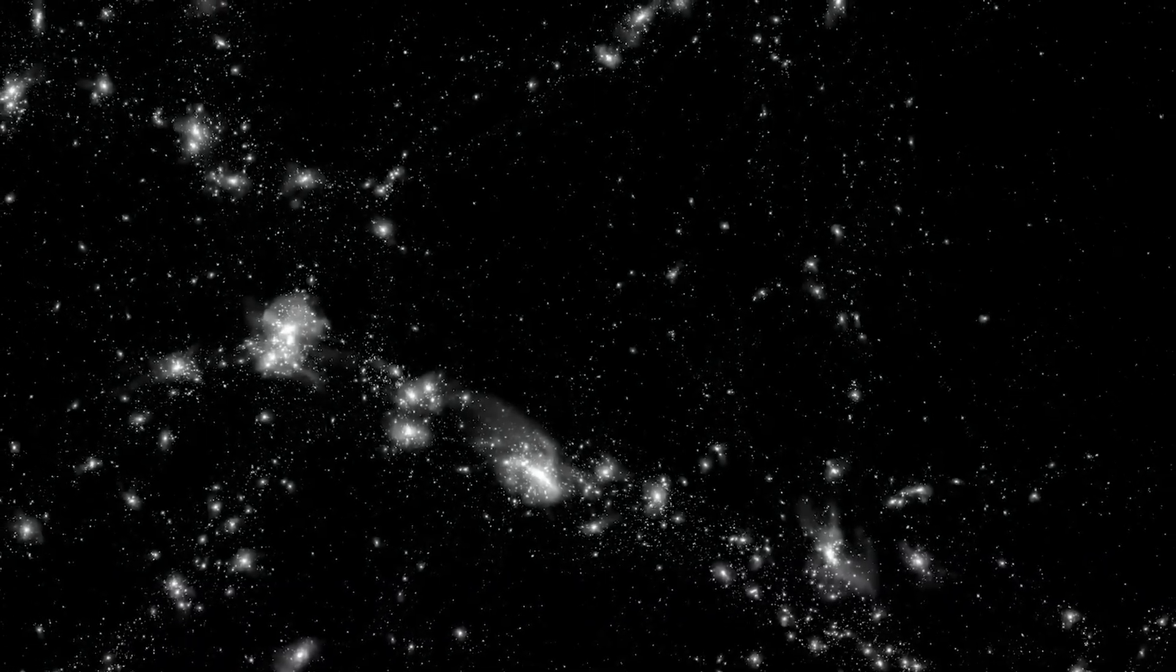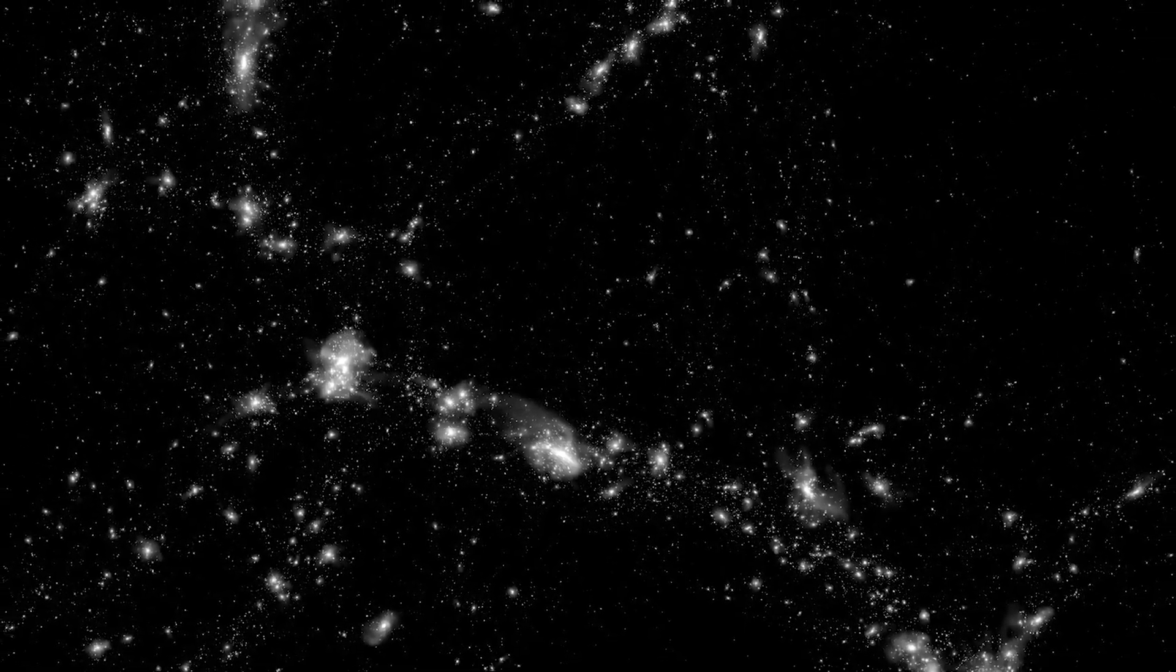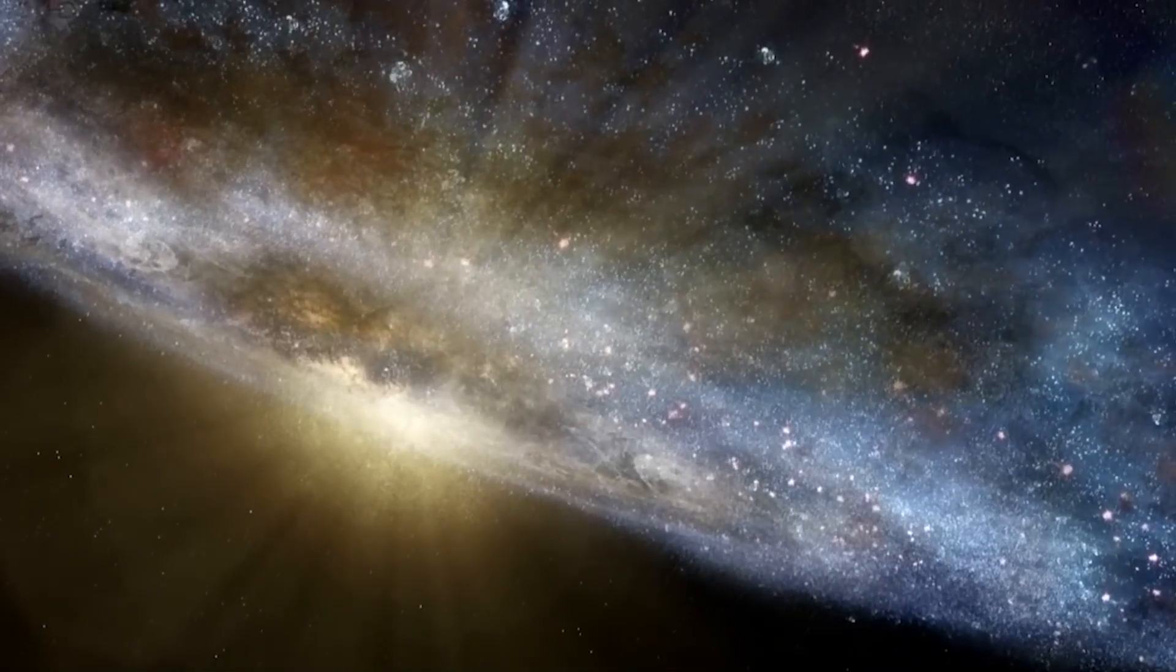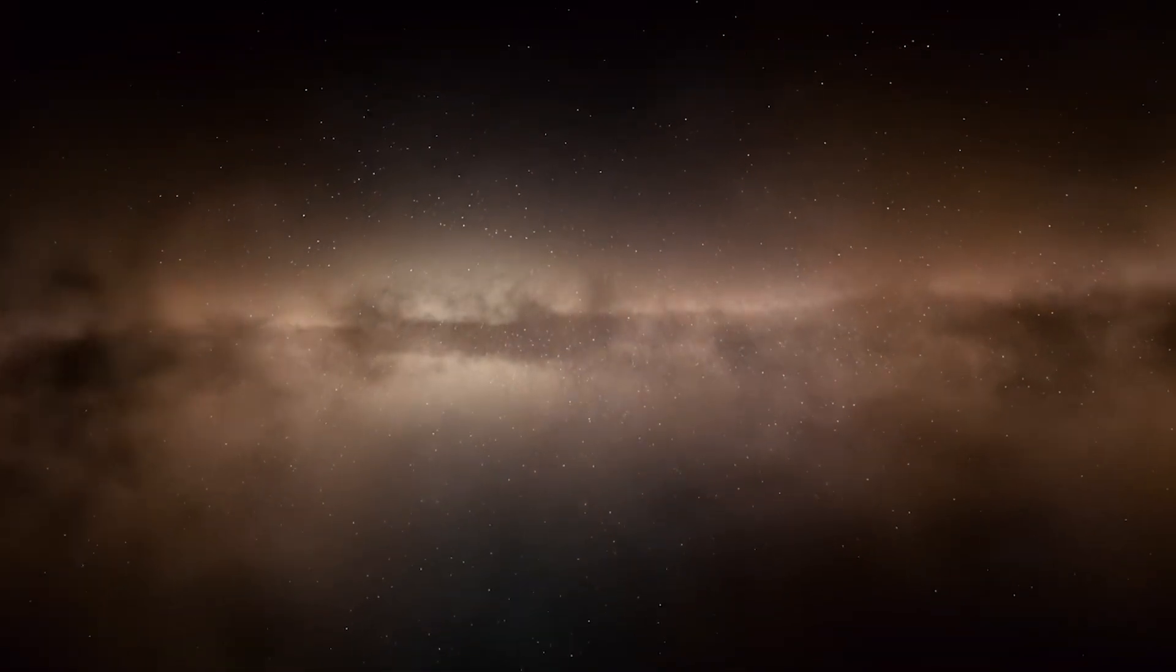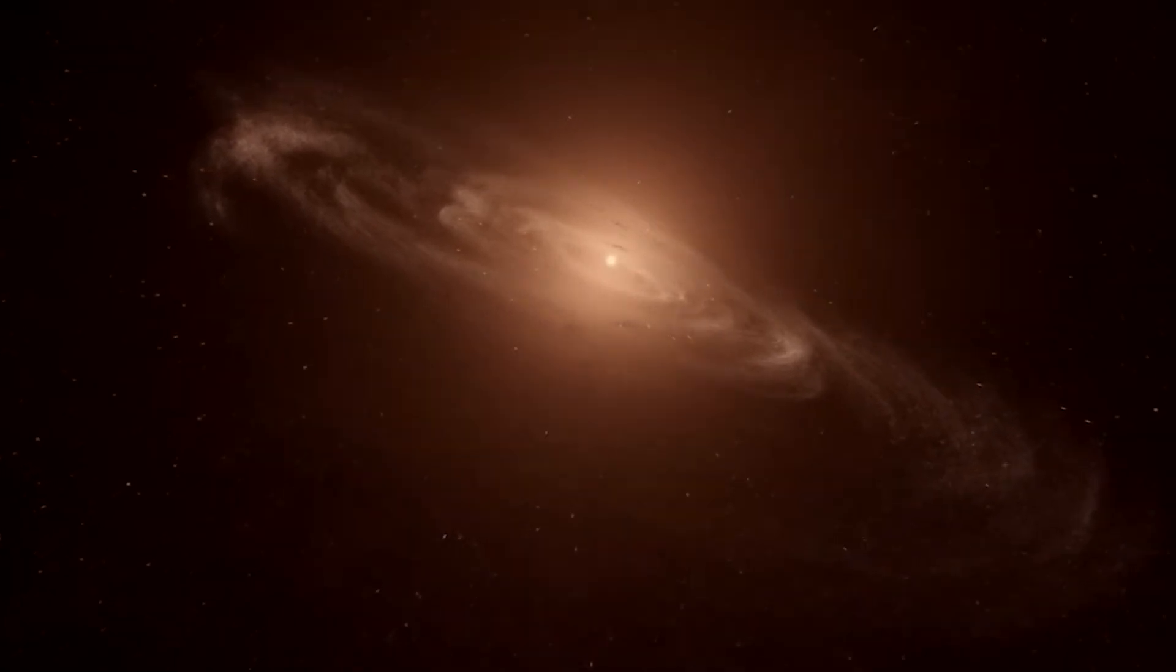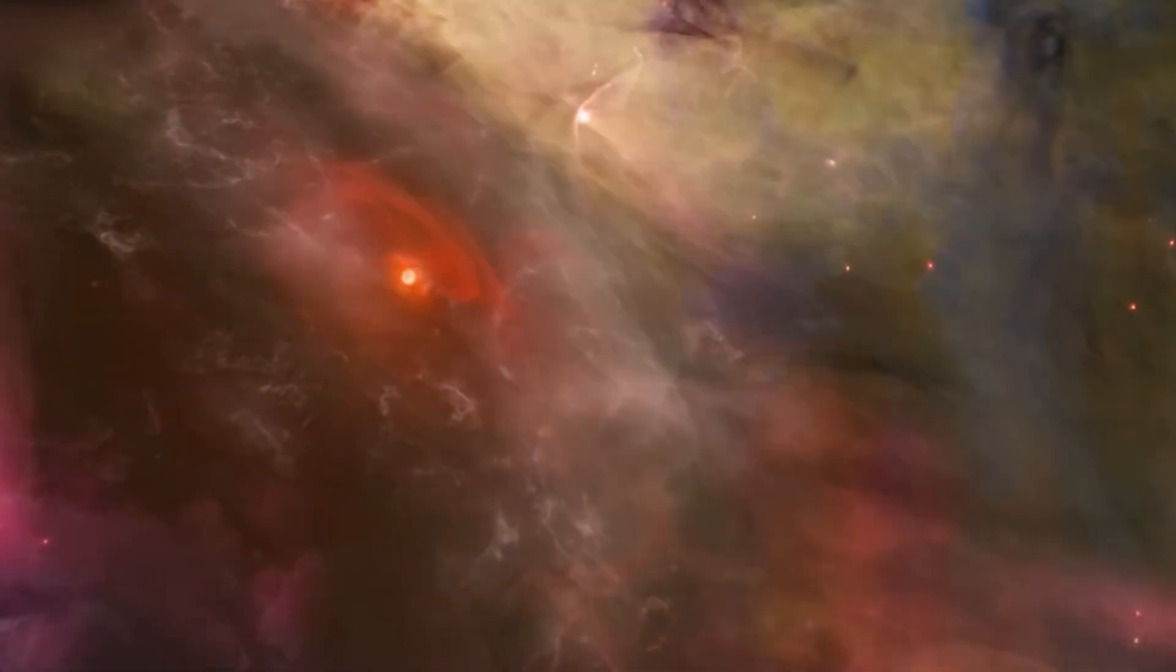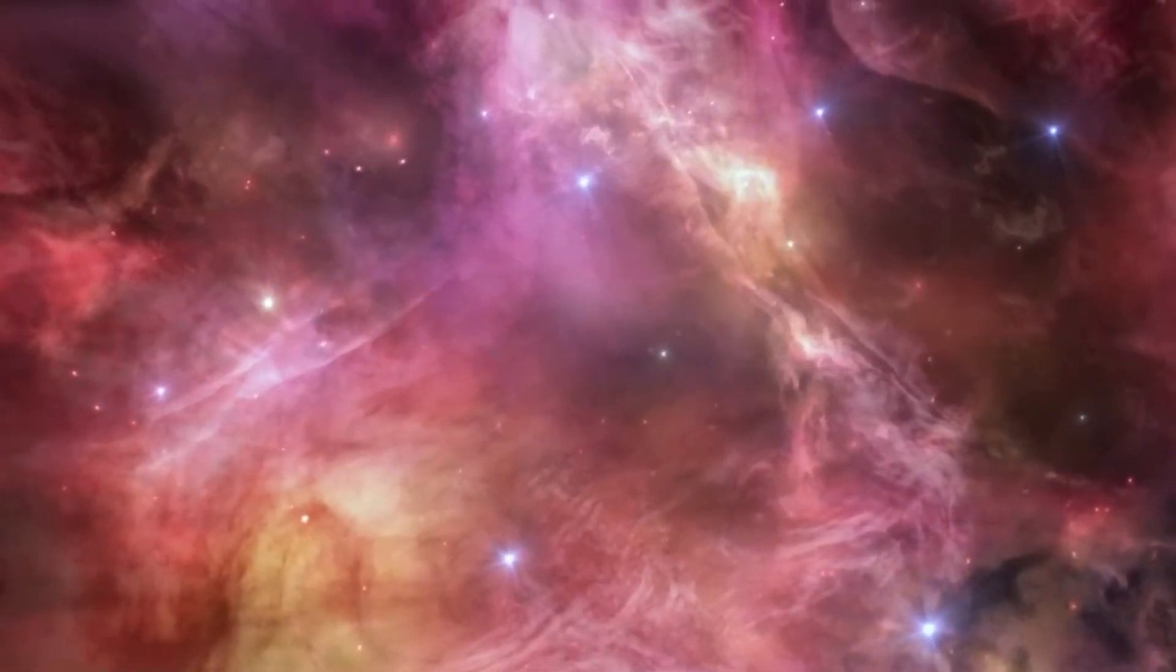Subsequently, the universe entered a phase known as the Dark Ages, characterized by a dearth of light sources and ionizing radiation. However, a few hundred million years after the Big Bang, the first stars and galaxies emerged, initiating the process of reionization. These nascent objects emitted intense ultraviolet radiation, stripping electrons from hydrogen atoms and transforming the universe from a predominantly neutral state to an ionized one. This milestone marked a turning point in the formation and evolution of galaxies, setting the stage for the universe as we know it today.